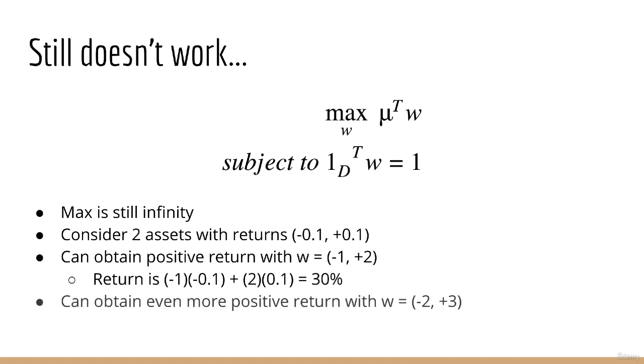But why can't we be more extreme? How about minus 200% in asset 1 and 300% in asset 2? This still sums to 1. In this case, our return will be minus 2 times minus 0.1 plus 3 times 0.1, which is equal to 0.5 or 50%. Obviously, we can just keep increasing the amount that we short on the first asset and then we'll have more to invest in the second asset, which will keep increasing our return. So this is not good.